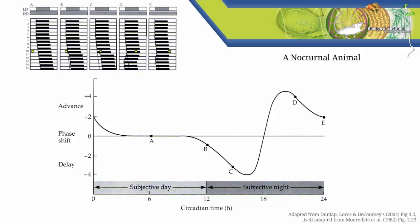First, throughout most of subjective day, it's not possible to produce either a phase advance or a phase delay. This is what's called the dead zone. You can generally predict that any free-running organism will fail to respond to a pulse of light during the middle of subjective day.